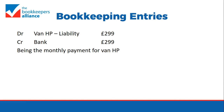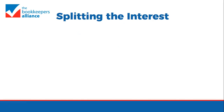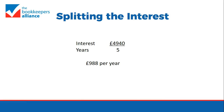But how do we calculate the interest? The simplest way is to say that he owes £4,940 in interest, so we split that straight over the five years, giving an interest payment of £988 a year.